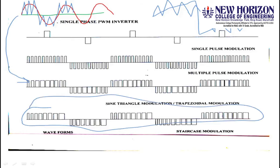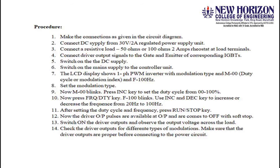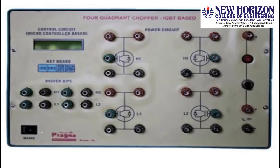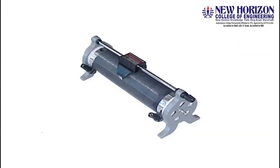These resultant pulses are given to the switches of the inverter. Now we'll move to the circuit. The kit used in the lab also requires a CRO and a rheostat. This is the inverter circuit we will be using.